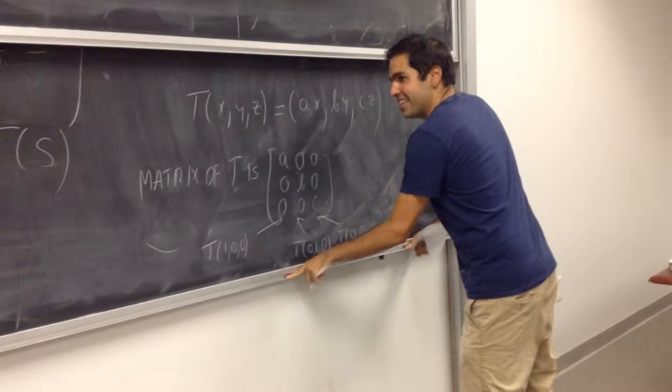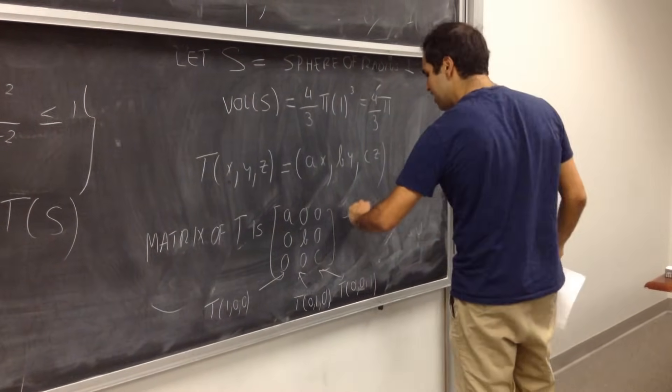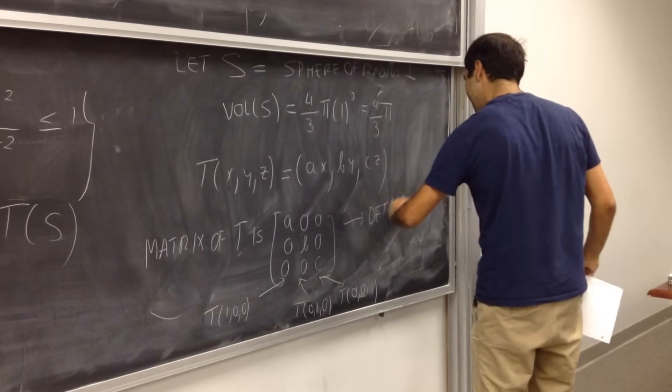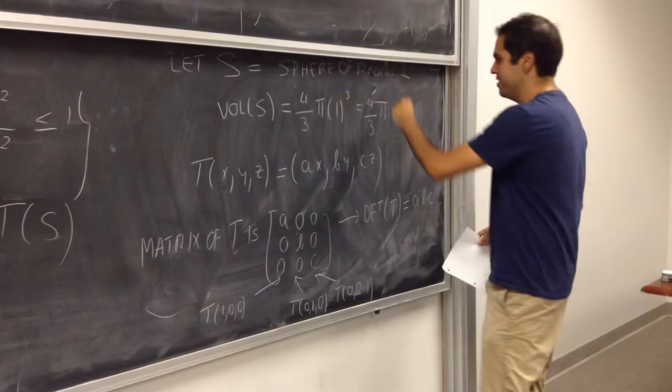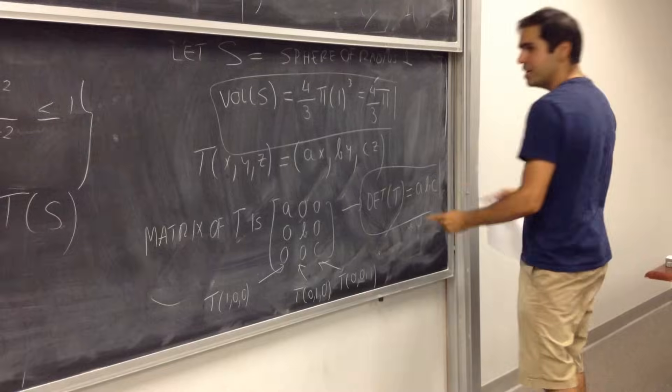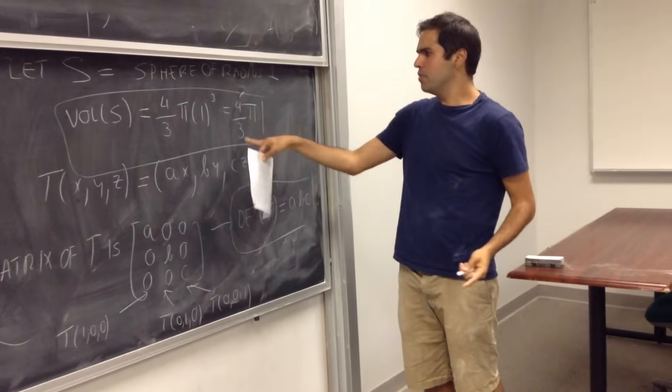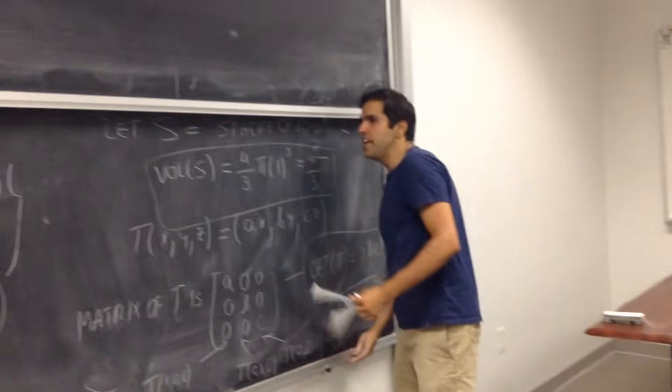So, we have this matrix, it's very nice, it's diagonal, so the determinant of T is just a, b, c, as easy as a, b, c. Good? So, we have those two ingredients, we know the volume of S is 4 thirds pi, the determinant of T is a, b, c. Now,